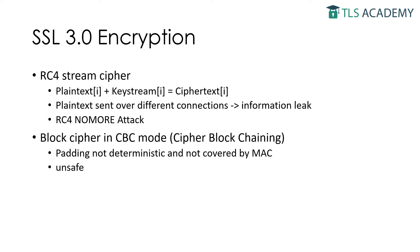SSL 3.0 supports two encryption methods. The first one is the stream cipher RC4, short for Rivest Cipher 4 and also known as Arc4. Each byte by byte, a plaintext character is encrypted with a corresponding character of the keystream. While RC4 is very easy to implement, it has also been proven insecure.